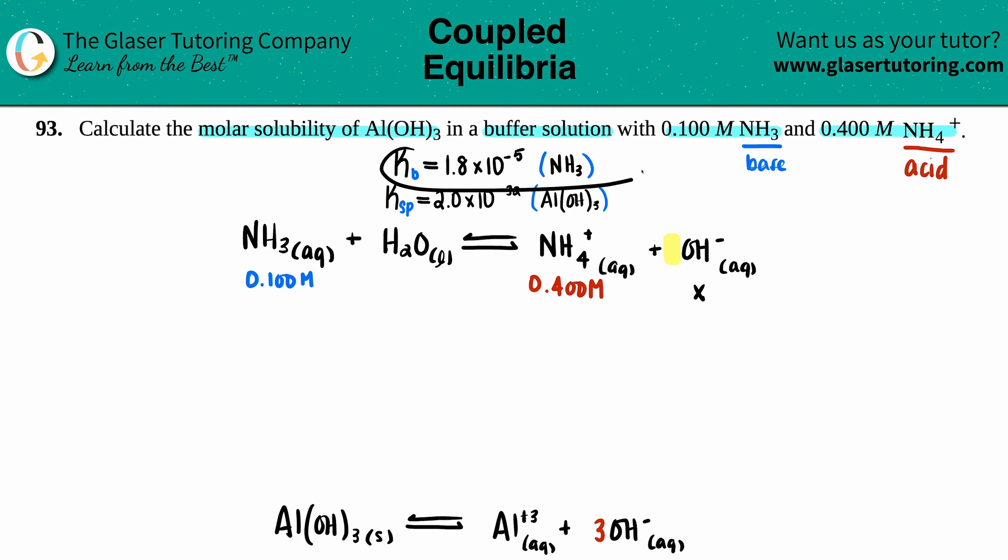Let's write out that Kb expression. Kb or any K value is products over reactants. So Kb equals the concentration of the products—there are two of them: NH₄⁺ times OH⁻ divided by the NH₃.